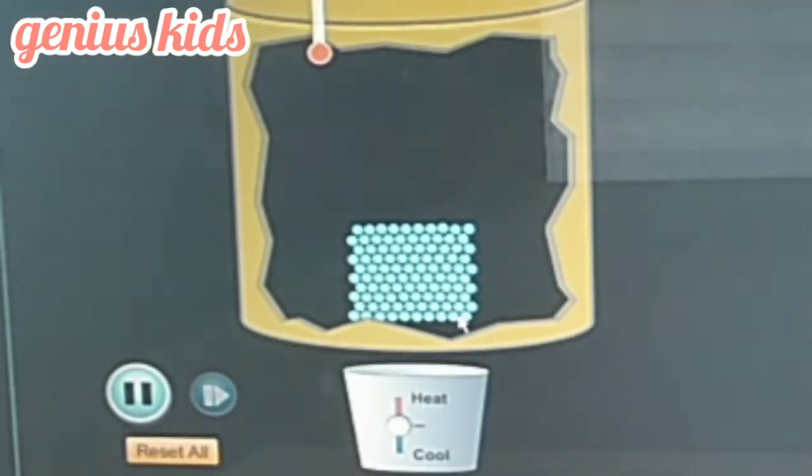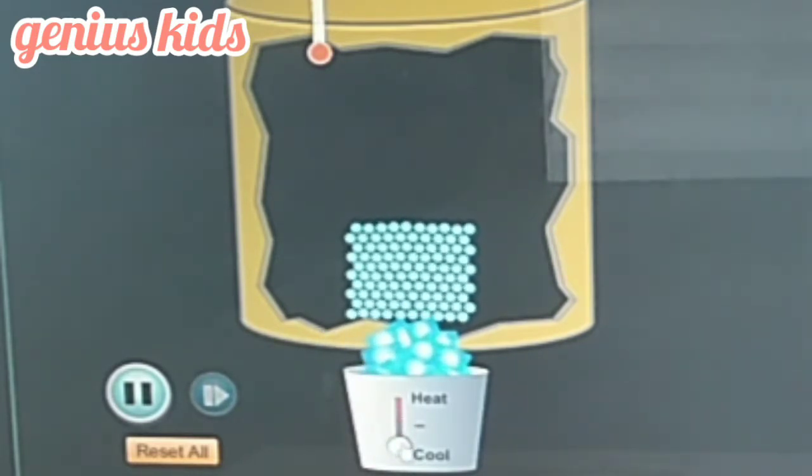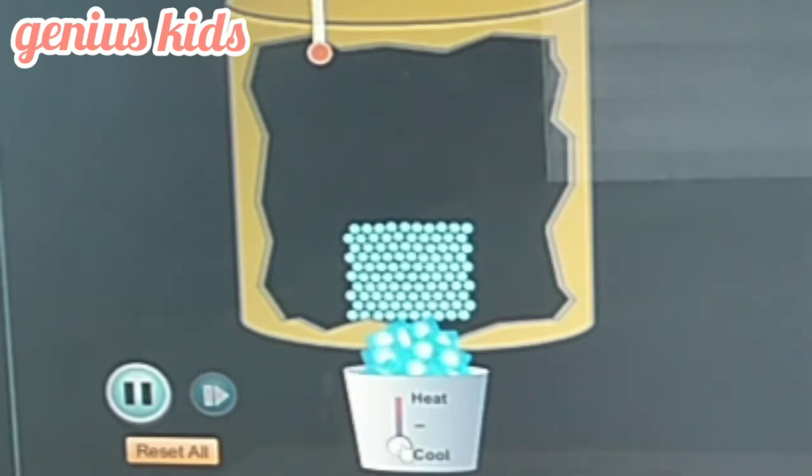There is ice in this glass. We can indicate its shape. It is rectangular. It has a solid shape.